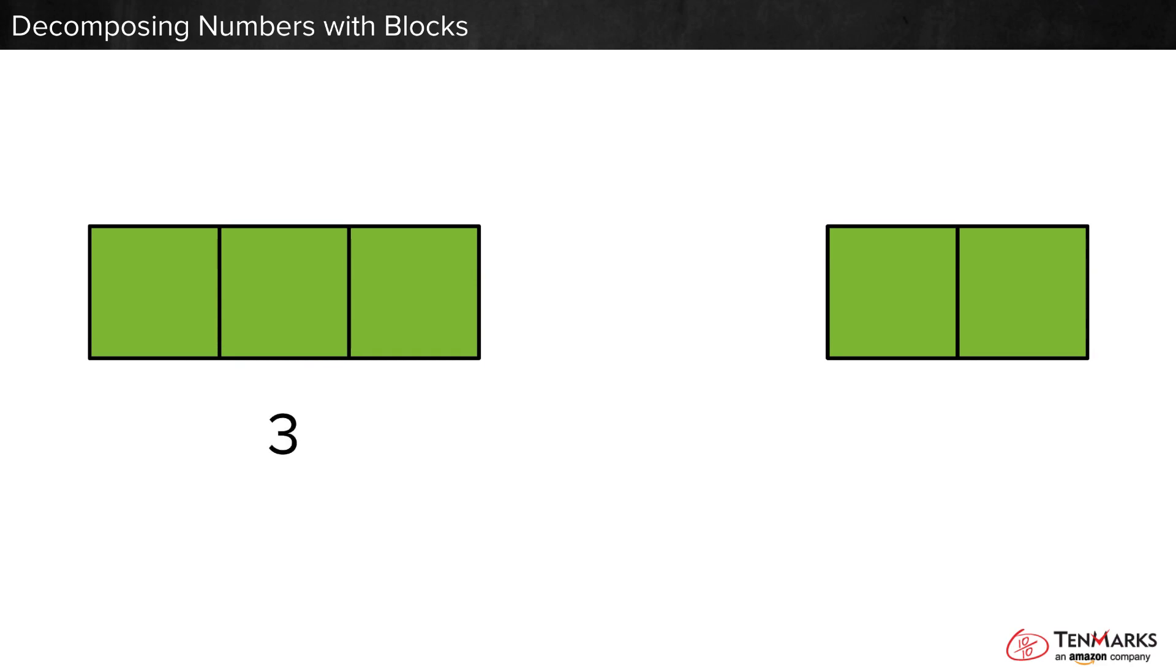This piece has three blocks. How many blocks does the other piece have? Two blocks. Three and two make five.